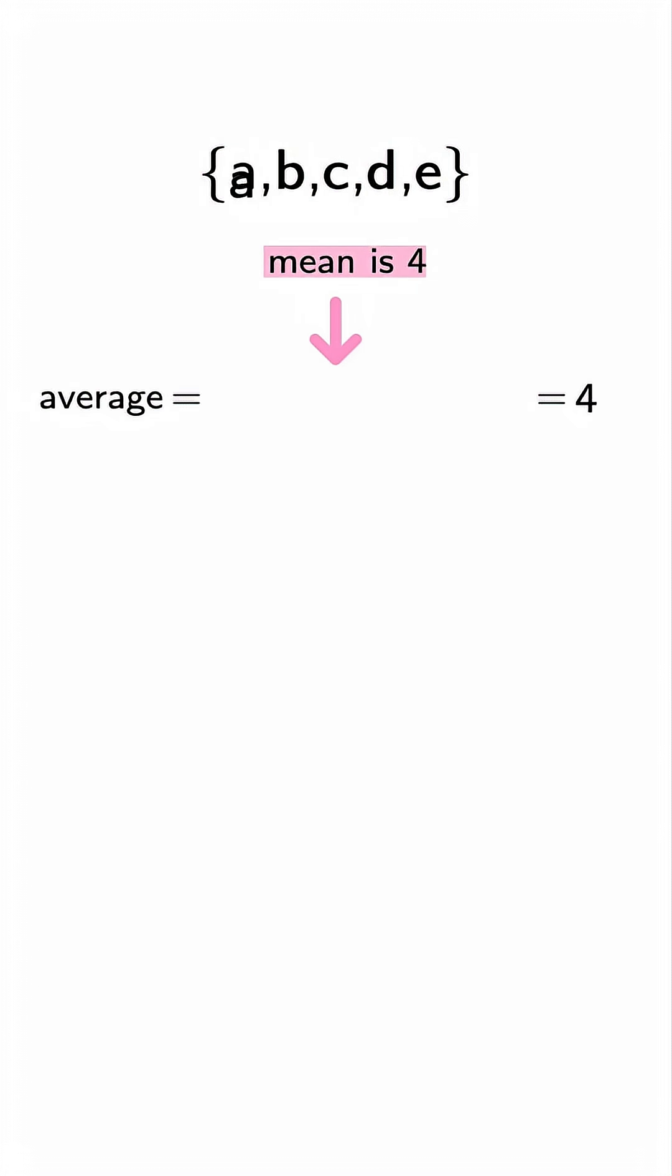Mean means average. Add up all five numbers and divide by five. If the mean is four, that means the total sum must be five times four, which equals 20.